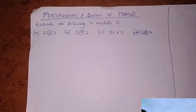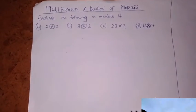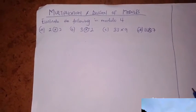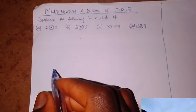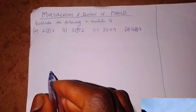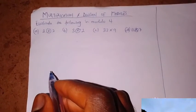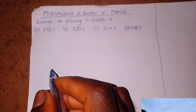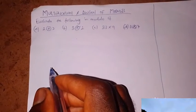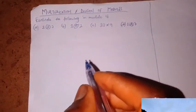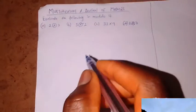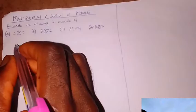Evaluate the following in modulo 4. Just as we looked at addition and subtraction of moduli — for addition, we move to the front in a circle; for subtraction, we go backwards — now for multiplication and division, let's see how we're going to solve these questions.